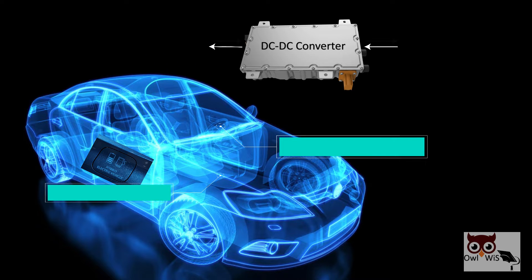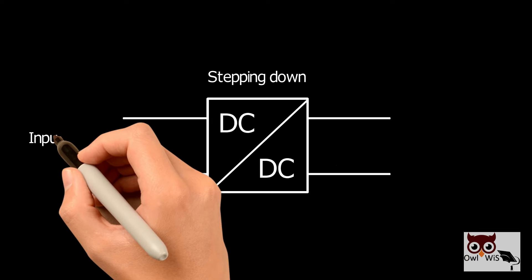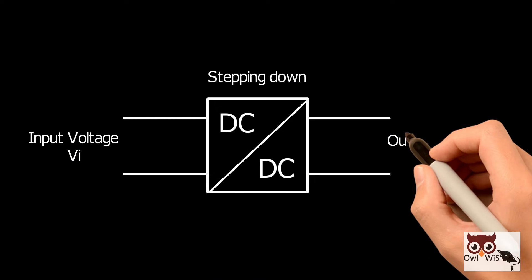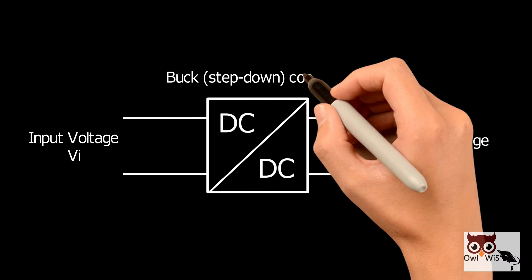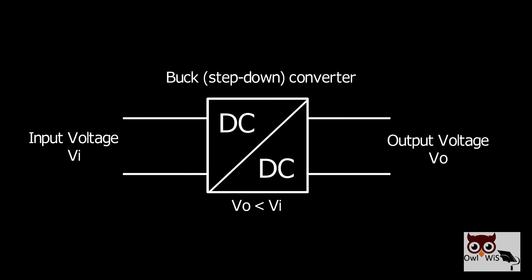DC-DC converter that is responsible for stepping down the input voltage to desired level of output voltage is known as a buck step-down converter. In this case, the output voltage is less than input voltage.